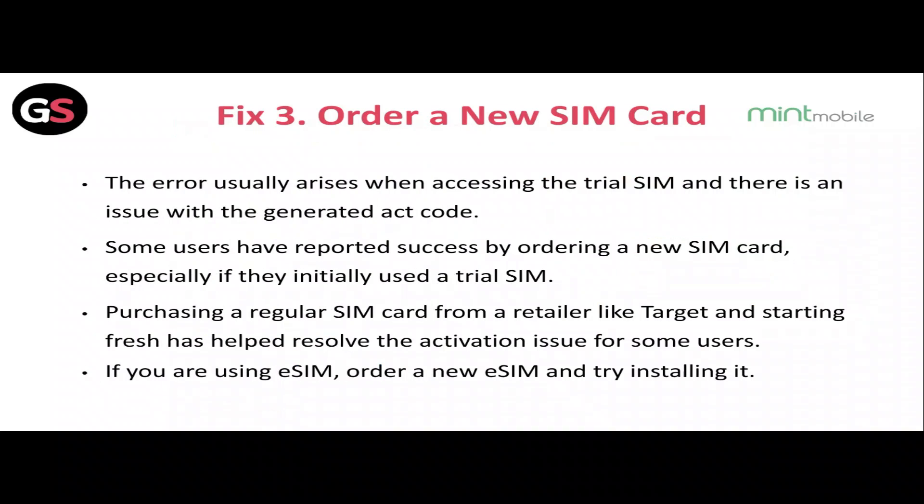Fix 3: Order a new SIM card. The error usually arises when accessing the trial SIM and there is an issue with the generated act code. Some users have reported success by ordering a new SIM card, especially if they initially used a trial SIM. Purchasing a regular SIM card from a retailer like Target or starting fresh has helped resolve the activation issue for some users. If you are using eSIM, order a new eSIM and try installing it.